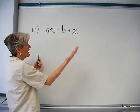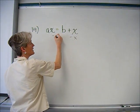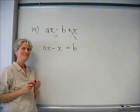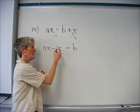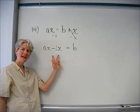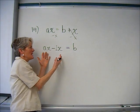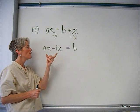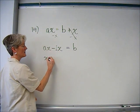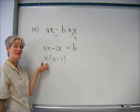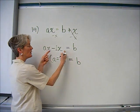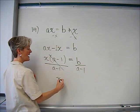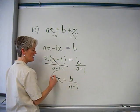I'll start by bringing my x's to one side: ax minus x equals b. This is a little tricky because there's a coefficient of 1 in front of the lone x — these are not like terms, so I can't easily combine them. But factoring might help. If I factor out the greatest common factor of x, that pulls out x and allows it to be isolated. So I factor out x and get x times (a minus 1) equals b.